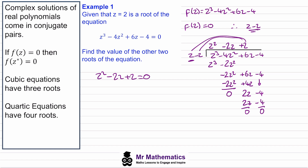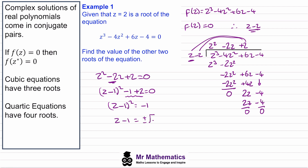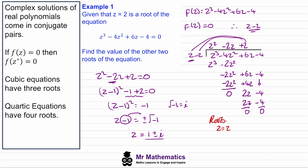To find the other two roots we solve z squared minus two z plus two equals zero using completing the square. We get z minus one all squared plus one equals zero, so z minus one equals plus or minus the square root of negative one. Since the square root of negative one is i, we get z equals one plus or minus i. These are our two complex roots.